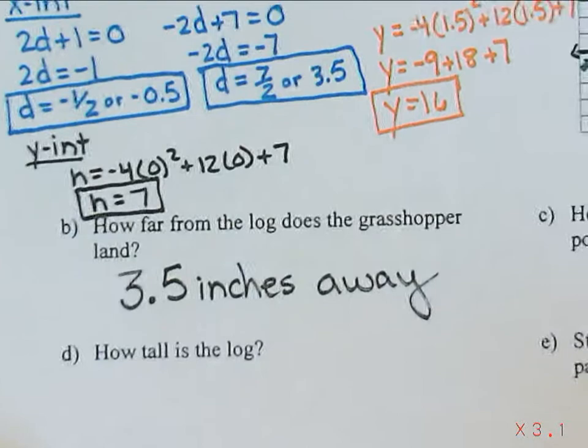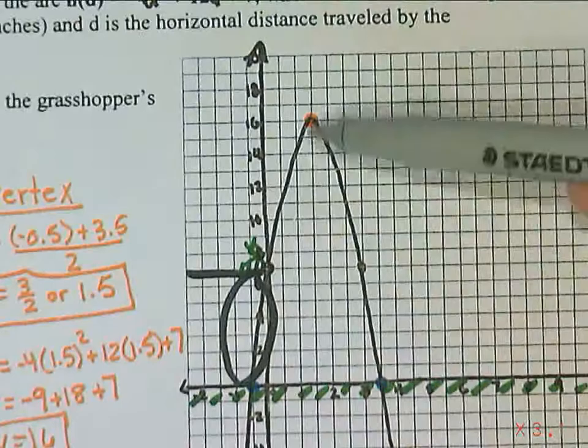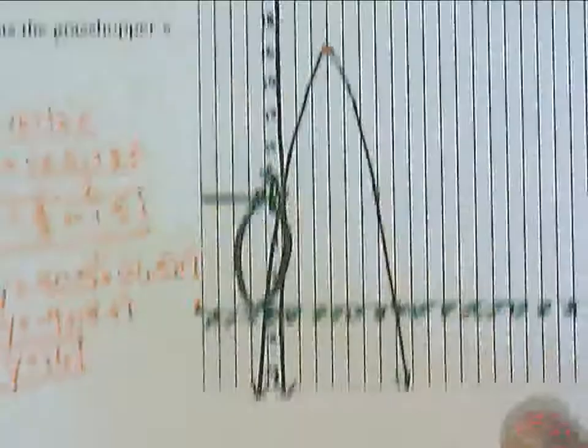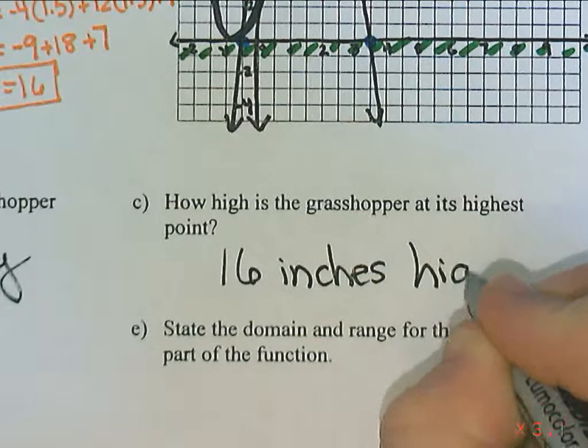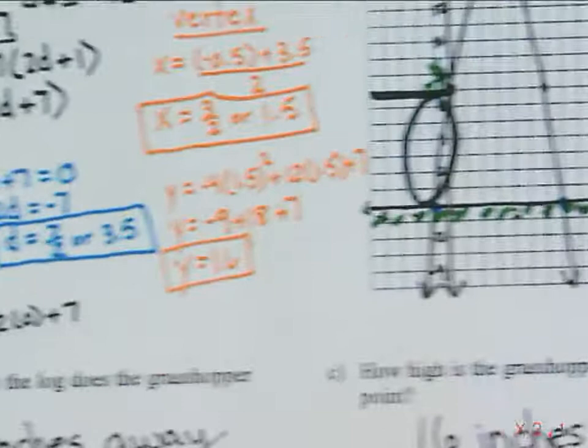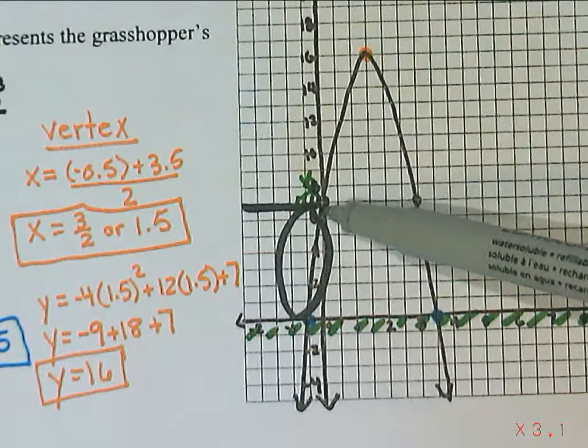The second question says how high is the grasshopper at its highest point? So the highest point would be here at the very top of the vertex, which is 16. So it is 16 inches high. The next question says how tall is the log? So the grasshopper is standing on the log when he starts, and he starts at a y-intercept of 7, which means that that log is 7 inches tall.